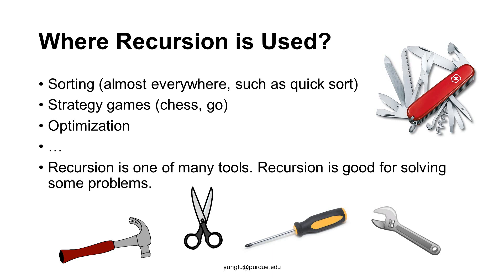Homework 7 asks you to use the QSort function in C. The QSort function implements the QuickSort algorithm, which is a recursive algorithm. Recursion is also widely used for solving strategy games such as chess and Go, and for solving optimization problems.